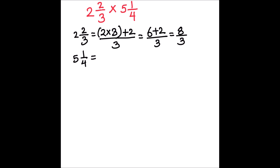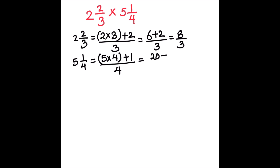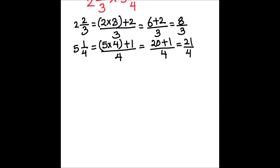Now let's convert five and one fourth into an improper fraction. This is going to be five times four plus one, divided by four, which equals twenty plus one divided by four, which is twenty-one over four. Now we can multiply the two fractions: eight thirds times twenty-one fourths.